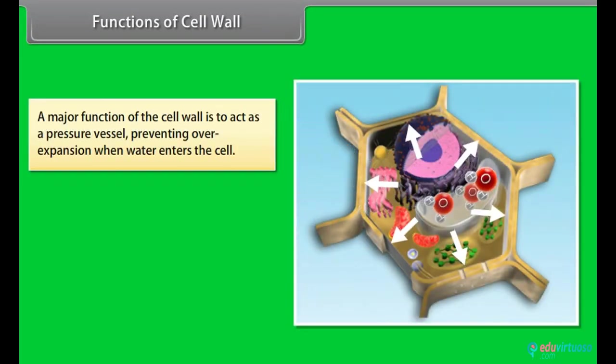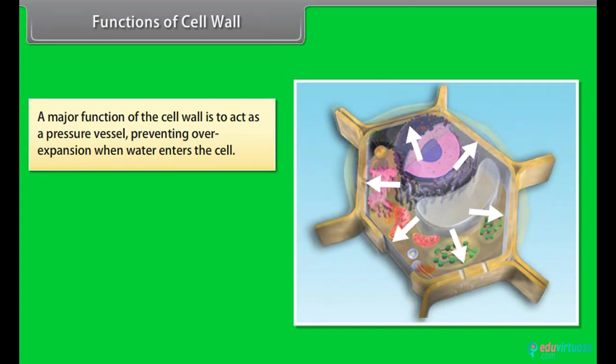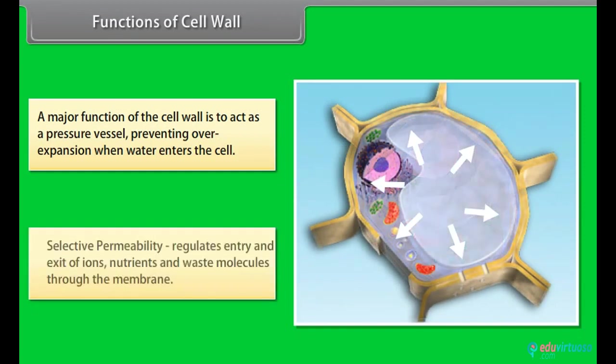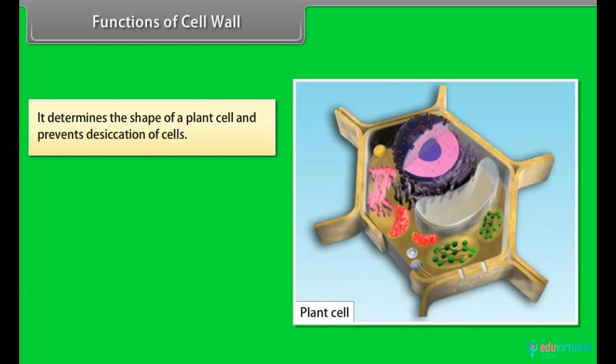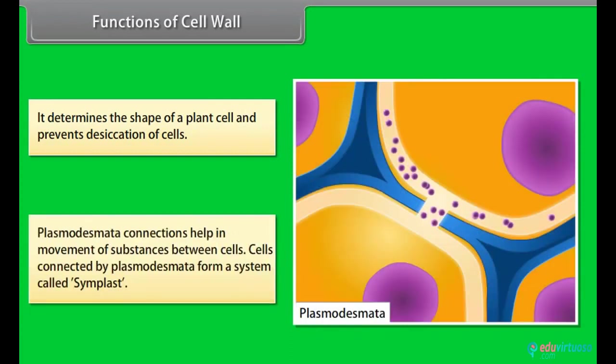Functions of cell wall: A major function of the cell wall is to act as pressure vessel preventing overexpansion when water enters the cell. Selective permeability - regulates entry and exit of ions, nutrients and waste molecules through the membrane. It determines the shape of a plant cell and prevents desiccation of cells. Plasmodesmata connections help in movement of substances between cells. Cells connected by plasmodesmata form a system called symplast.